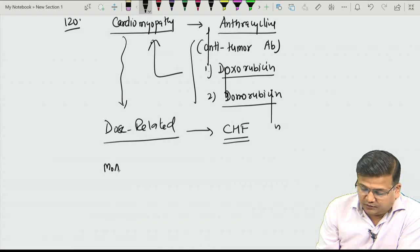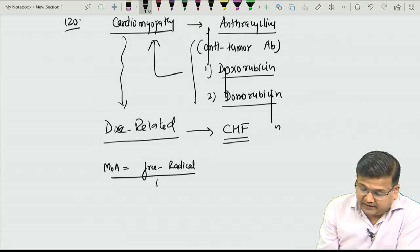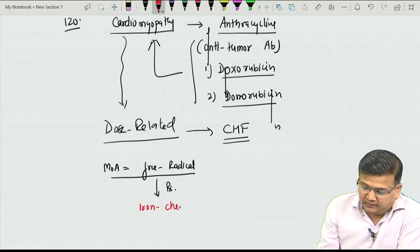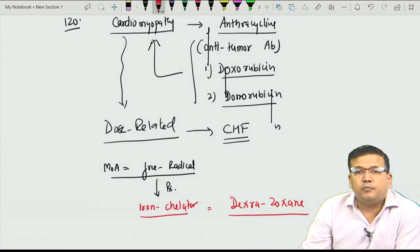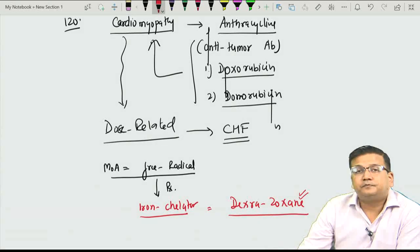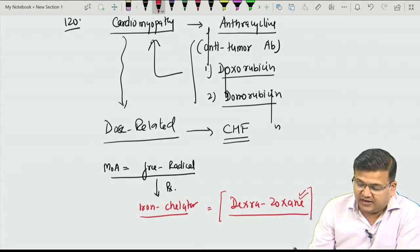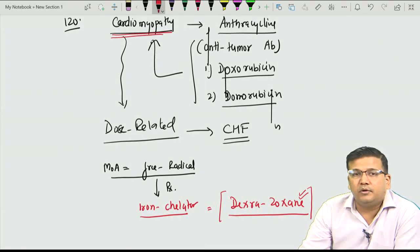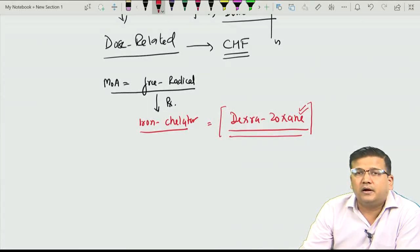The mechanism of anthracycline-induced cardiomyopathy is not very clear but is supposed to be free radical mediated damage. Based on this proposed mechanism, a treatment has been proposed: the role of an iron chelator known as dexrazoxane. This is the only iron chelator used to decrease the side effect of anthracyclines, that is cardiomyopathy. Remember dexrazoxane as the treatment of cardiomyopathy caused by anthracyclines.